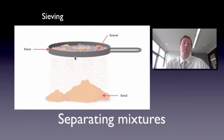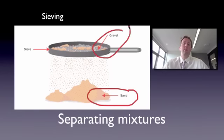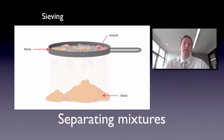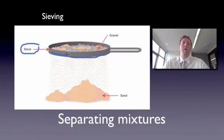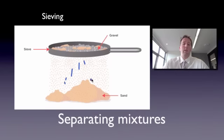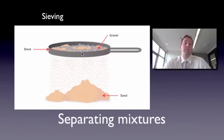Another way to separate mixtures is something called sieving — it's fairly similar to filtration, but you can do it with two solids. Here I've got some sand and some gravel. Gravel is big, sand is small. This sieve has got holes in it which are big enough to allow the sand to go through but not the gravel. Sand goes through and collects at the bottom, while the gravel is too big to go through. After sieving, the sand's at the bottom and the gravel's at the top — the mixture is separated.